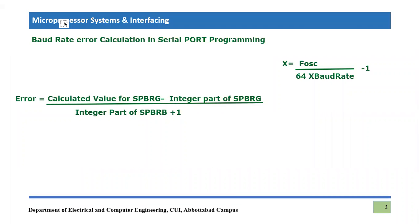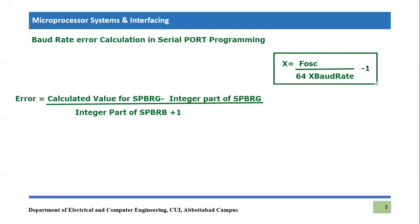The topic is baud rate error calculation in serial programming, so it is related with the value of SPBRG. We have discussed this register already and this register actually defines the baud rate which we can achieve in serial port programming. The formula we discussed for the calculation of SPBRG value uses X to indicate the value of SPBRG. To understand it, let's calculate one more time for a specific case.